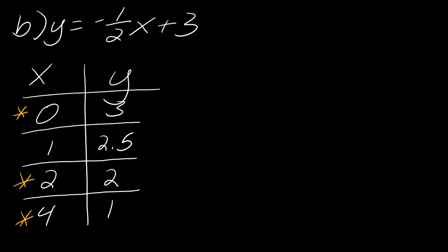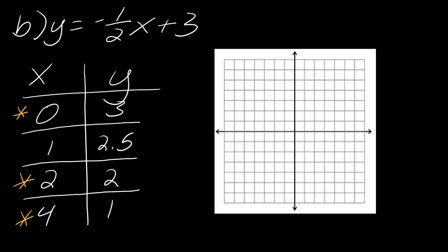Let me bring back the graph. Starting with (0, 3): 0 on x and up 1, 2, 3 on y. Then (2, 2): here's 1, 2 on x and up 1, 2. Then (4, 1): 1, 2, 3, 4 on x and up 1. Those three points definitely form a line, so I can connect them — there's the line.